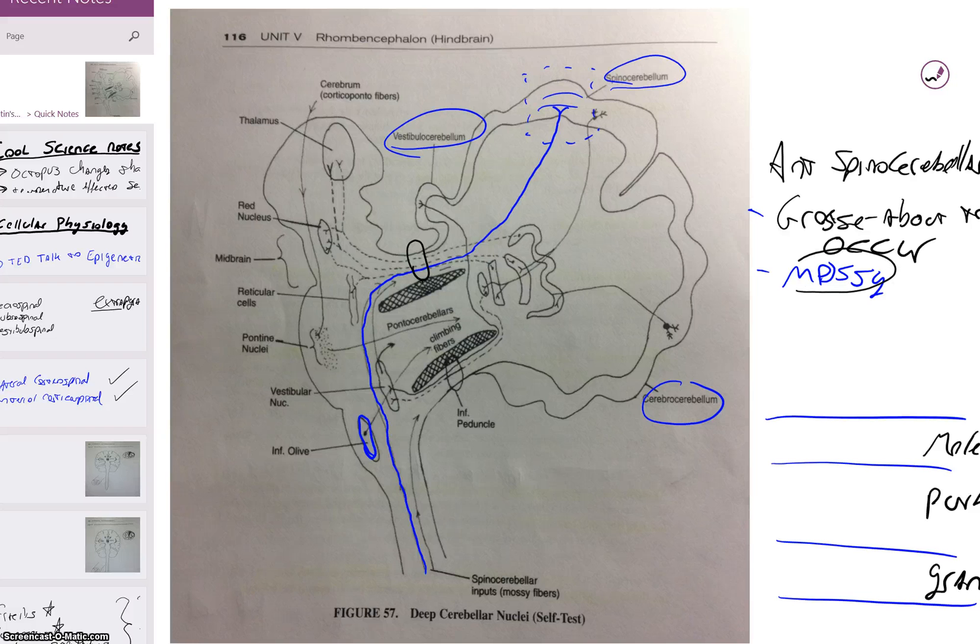Any mossy fiber is going to first synapse in the granular layer. And we know that because granule sounds like grain, which is always found on the ground, just like moss, which is always on the ground.